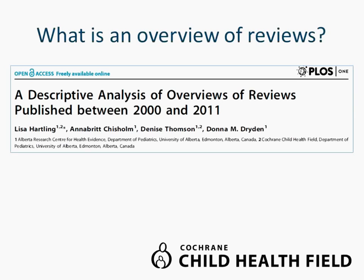We did a descriptive analysis looking at the medical literature from 2000 to 2011 and looked for published overviews of reviews, defining these broadly as reviews of systematic reviews. We noticed that the number of overviews increased dramatically over that period, but there was large variation in those overviews. There was variation in what they were called — for example, summary of Cochrane reviews, systematic review of systematic reviews, overview of systematic reviews, or even systematic meta-review. We also found extensive variation in how these overviews were approached in terms of the methods.